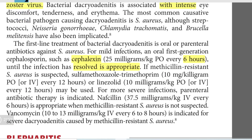If you suspect methicillin-resistant Staph aureus (MRSA), then sulfamethoxazole and trimethoprim combination at 10 mg per kg orally or IV every 12 hours, or clindamycin at 10 mg per kg orally or IV every 12 hours, should be used.